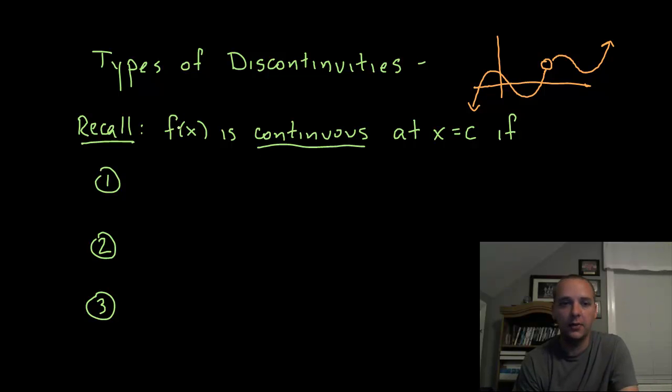To start this off, let's just quickly recap what it means to be continuous. So we would say that a function is continuous at a point, x equals c, if three things happen. Number one, the bare minimum is that the limit as x approaches c for the function must exist.